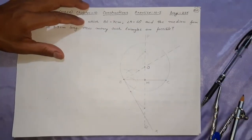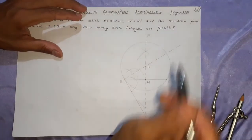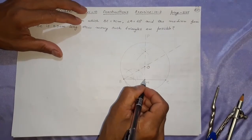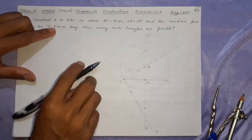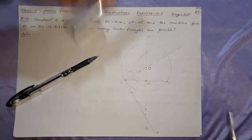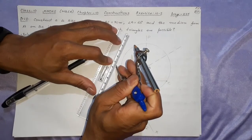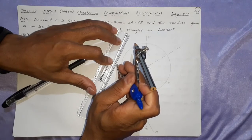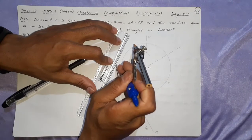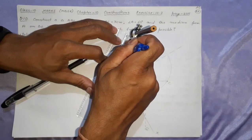The next step — the only difference — is that here it is median, not altitude. Median means it will always pass from the midpoint M, so directly you can cut 5.3 on this side and this side — finished. That 5.3 — here it is: 5.5, 5.4, 5.3 — here, 1, 2, 3. Always start from 0, not 1.